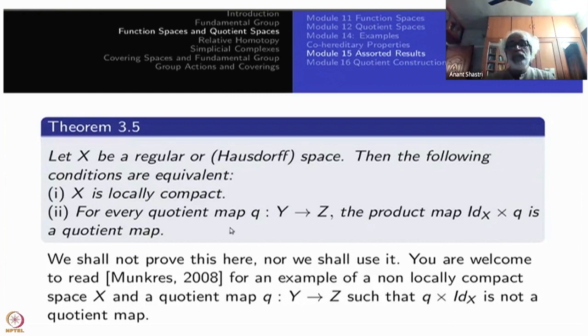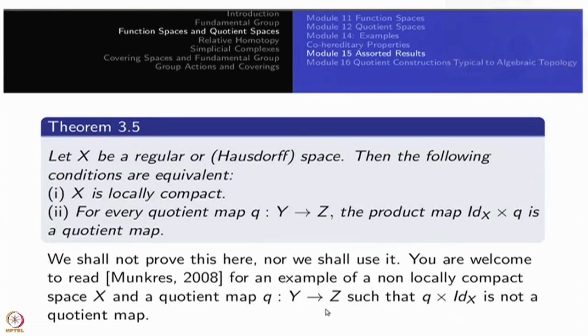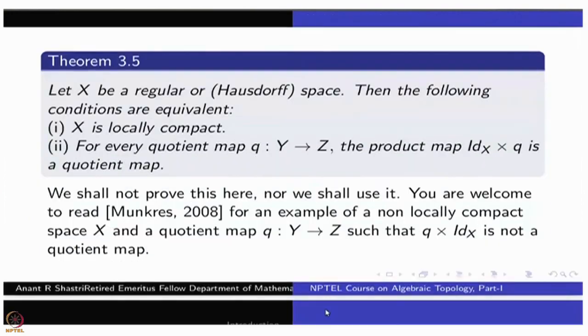The proof of this is interesting in some sense, namely, for each non-locally compact space, canonically it cooks up a quotient map. The quotient map is such that product with identity of X will not be a quotient map. It is not one example. For each non-locally compact space there is a nice canonical example.